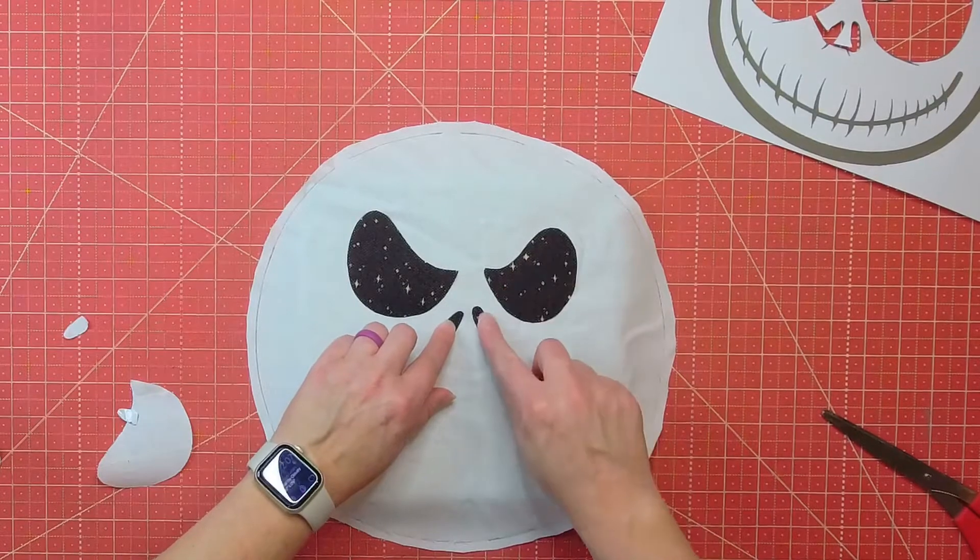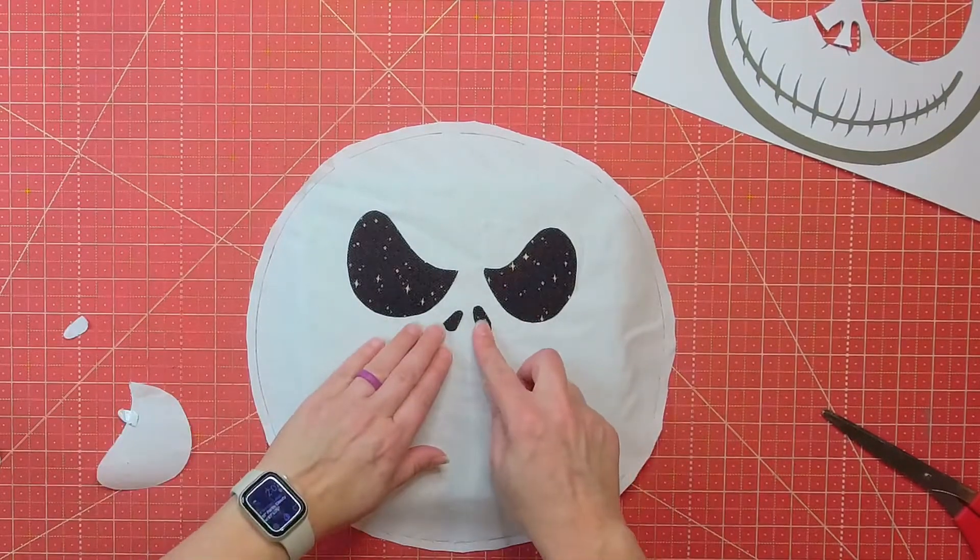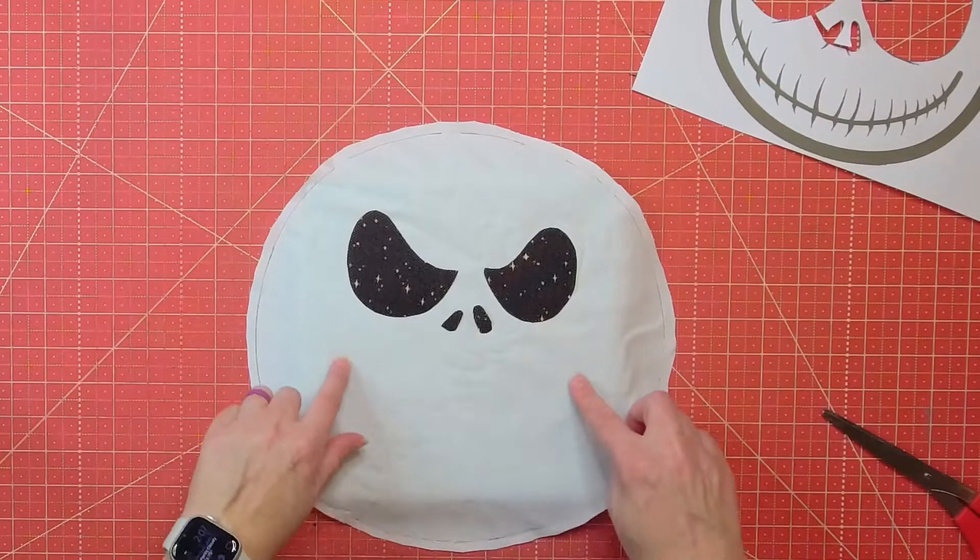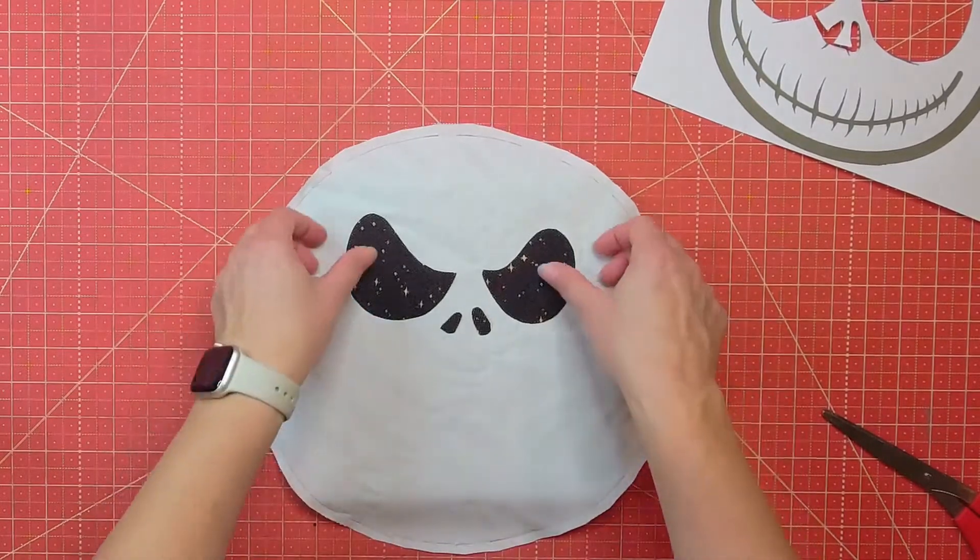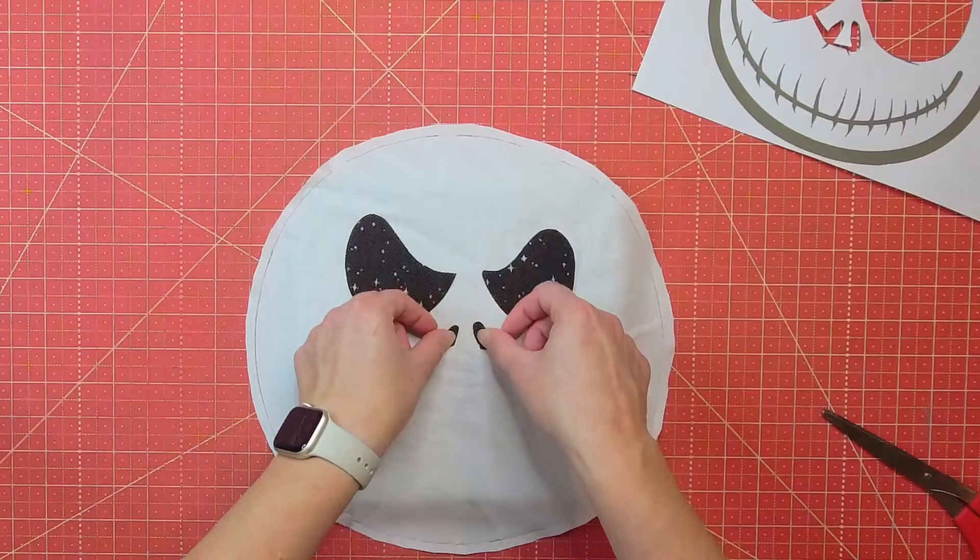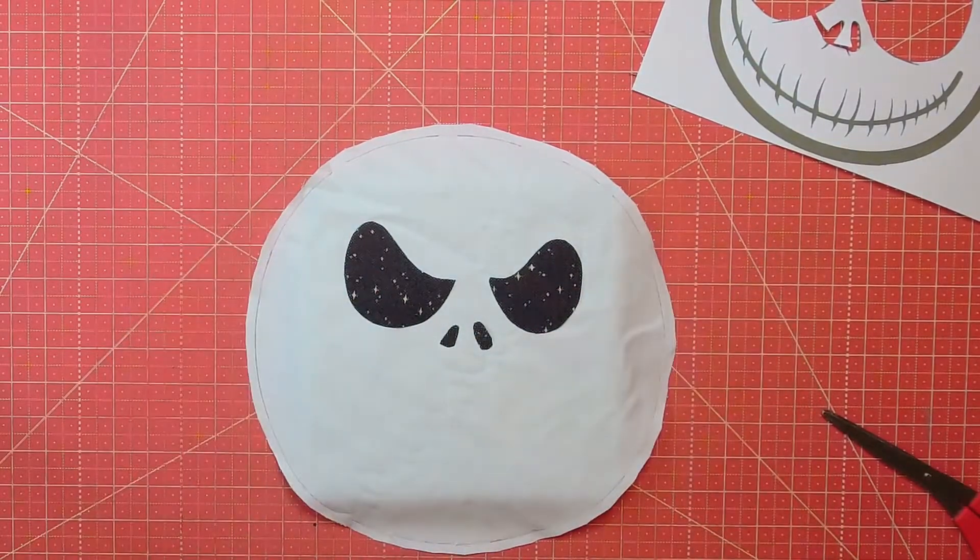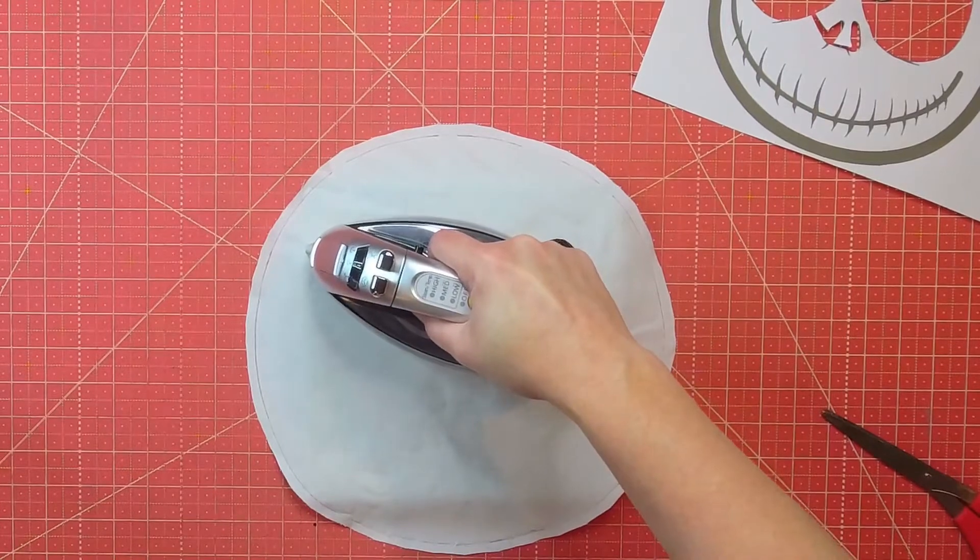All right. So once I get them removed, I'm just going to lay them out how I like. I can move them around a little bit and make sure I like how they look. And then you pretty much just use your iron again to fuse them in place. And I just follow the instructions on the heat and bond to make sure I fuse it for the proper amount of time.